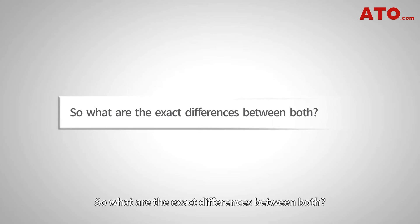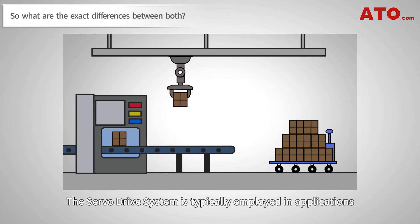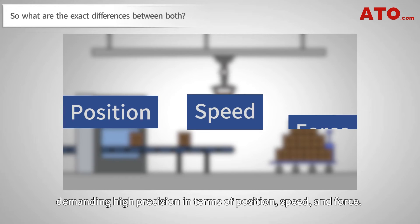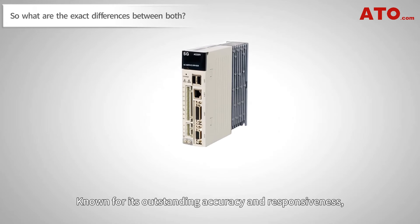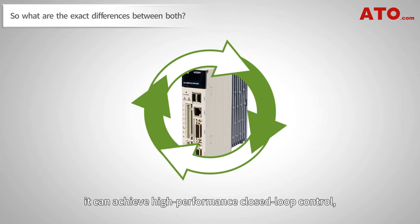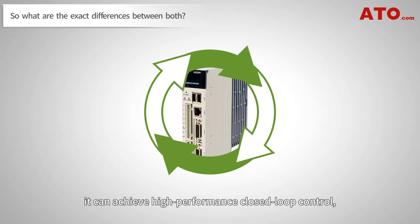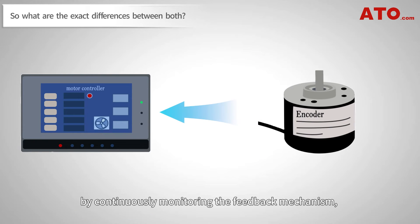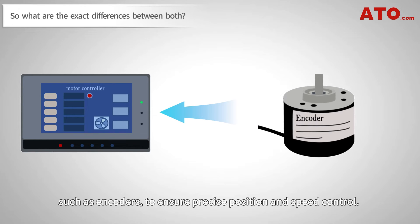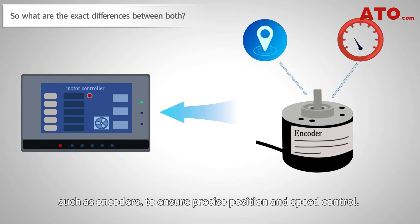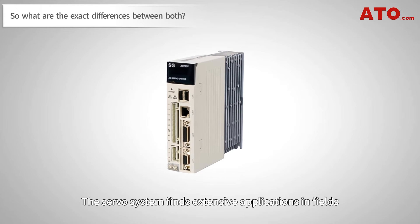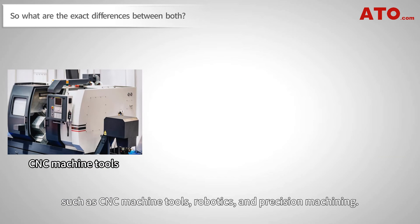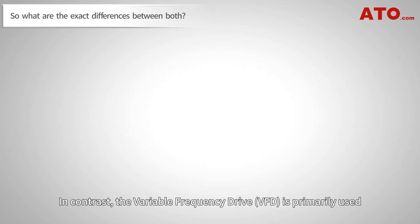So, what are the exact differences between both? The servo drive system is typically employed in applications demanding high precision in terms of position, speed, and force. Known for its outstanding accuracy and responsiveness, it can achieve high-performance, closed-loop control, with which the system adjusts itself by continuously monitoring feedback mechanisms such as encoders to ensure precise position and speed control. The servo drive system finds extensive applications in fields requiring high precision and performance, such as CNC machine tools, robotics, and precision machining.